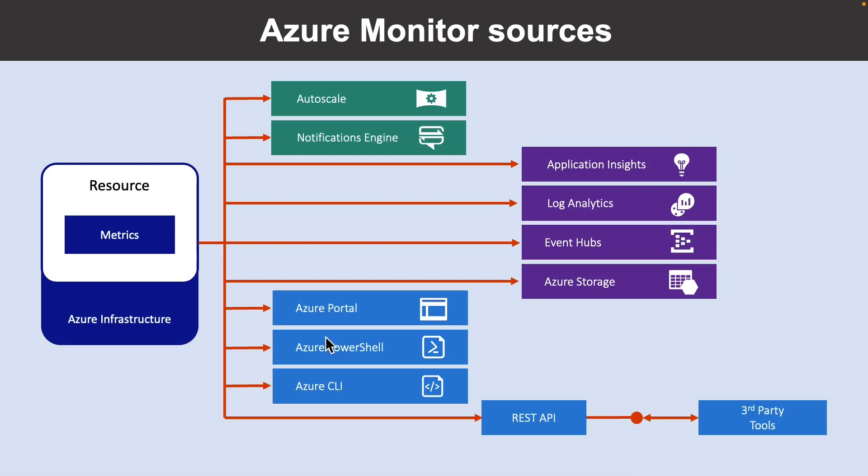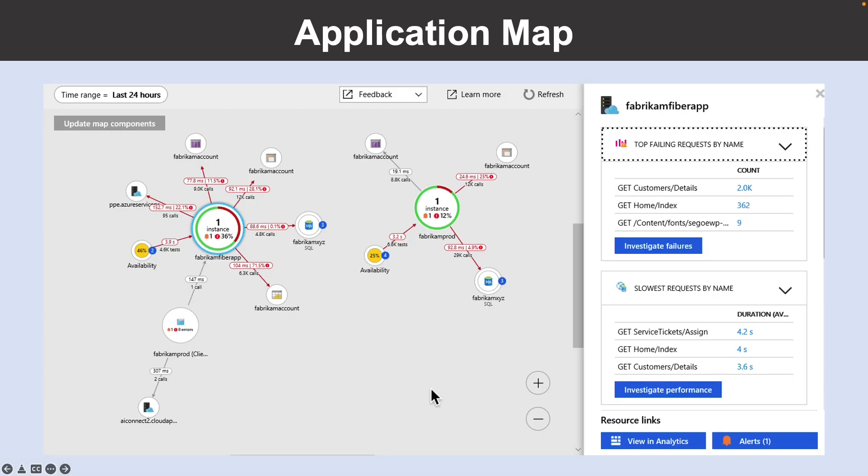All data collected by Azure Monitor fits into one of two fundamental types. Metrics are numerical values that describe some aspect of a system at a particular point in time — they are lightweight and capable of supporting near-real-time scenarios. Logs contain different kinds of data organized into records with different sets of properties for each type. Telemetry such as events and traces are stored as logs in addition to performance data so that it can all be combined for analysis.